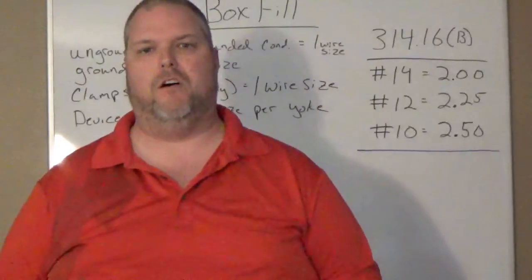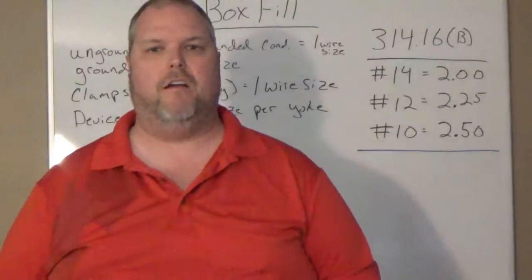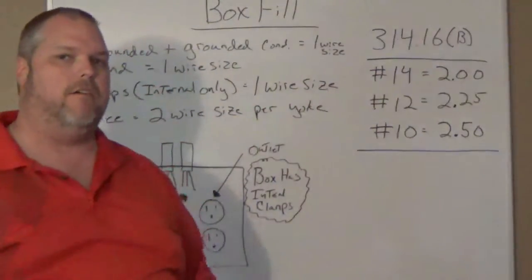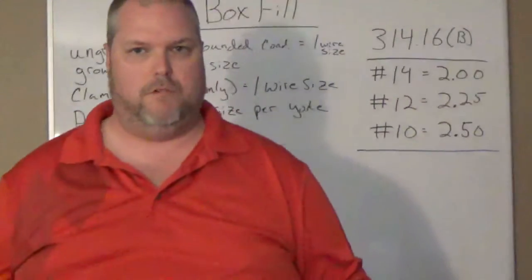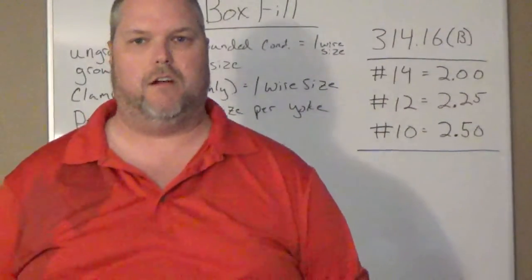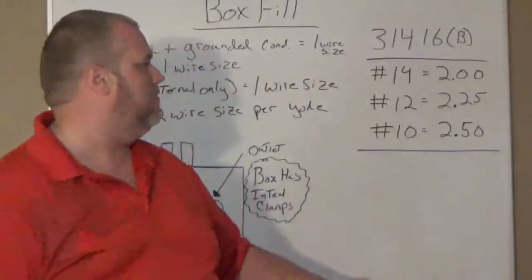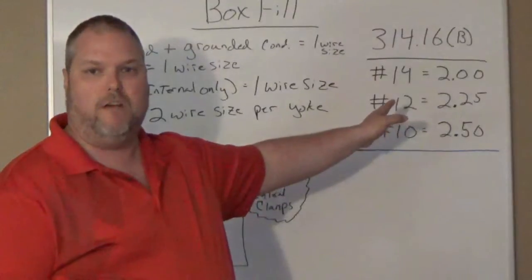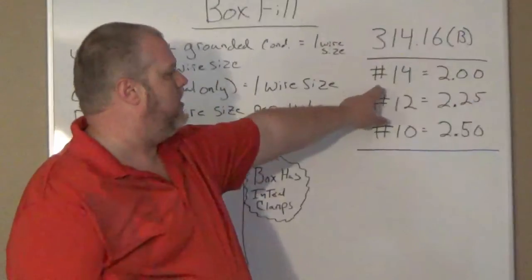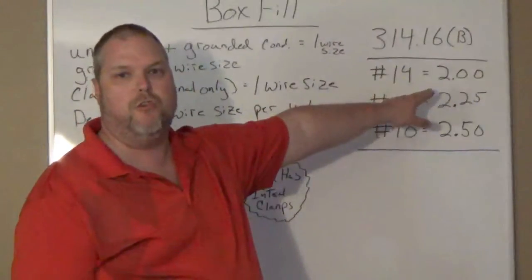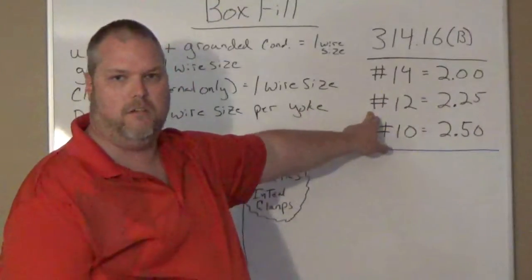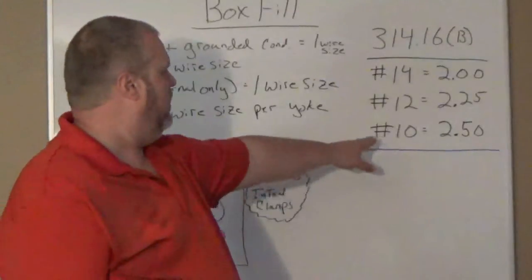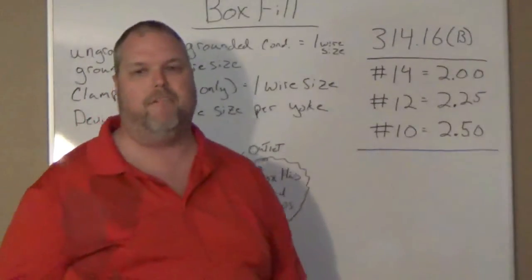Something that we need to understand, we need to understand that in article 314.16(B), that's going to give us our volume for conductors, one single conductor. So it basically states something like this: If you looked in the NEC codebook and we're talking about the 2014 codebook, 14 is equal to 2 cubic inches. A number 12 conductor is worth 2.25 and a number 10 is worth 2.5.